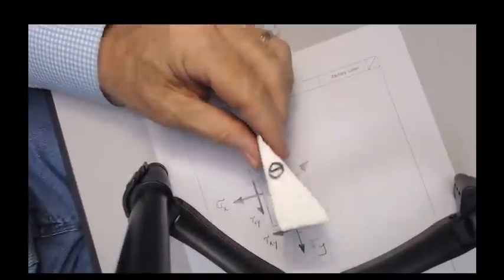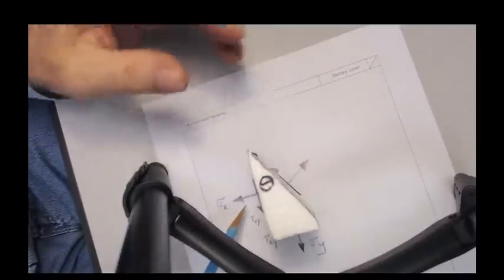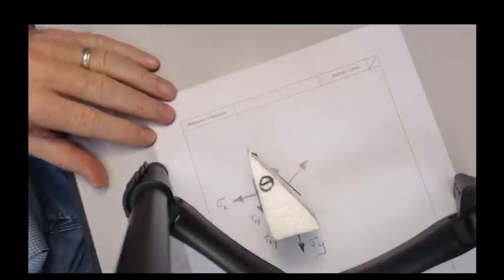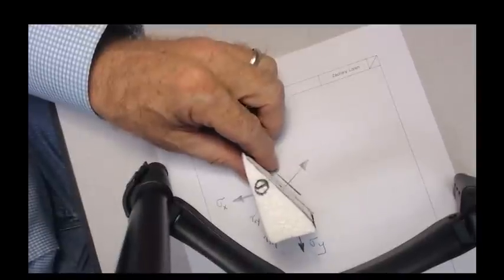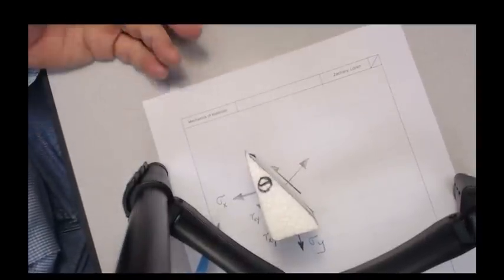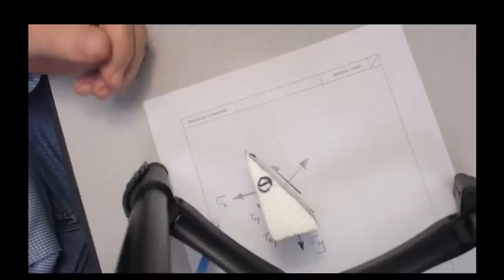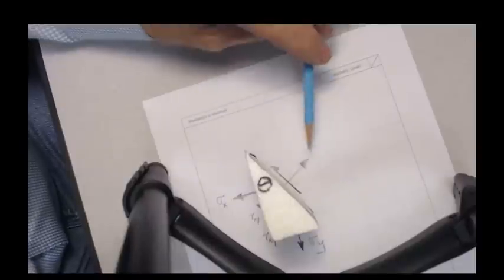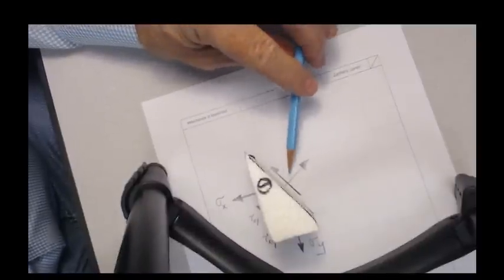So here's our wedge. And we have normal and shear stresses acting on all three planes. And if you will, we're given sigma x, sigma y, and tau xy. Maybe not given, maybe we've figured them out. And what our purpose is is to find these two stresses here.